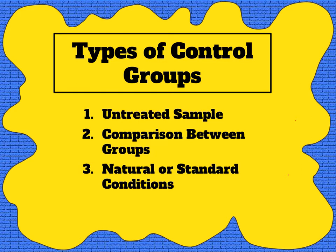Comparison between groups is when we don't have an untreated sample; however, we have several different groups that can be compared to one another, and any changes we see create a pattern to answer our question. The last type of control is natural or standard conditions, which are a little tricky. There's an established value for our independent variable that we use for comparison — for instance, 350 degrees is the recommended standard condition for baking a cake. If I change the temperature as my independent variable, I would compare my results to that standard of 350 degrees.